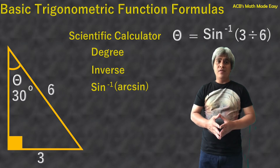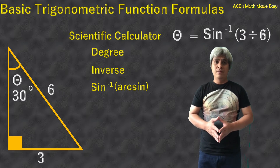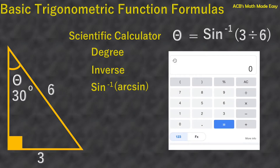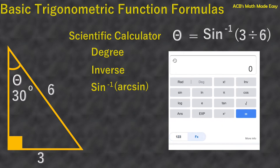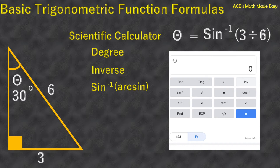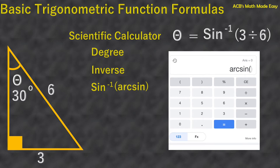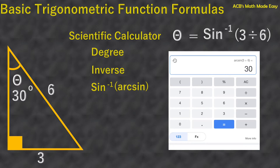I am going to use the scientific calculator from Google. Press the FX button to show the other functions. You can see the degree button — press it. Next step is to press the inverse button, the INV one. You can now press arc sine, and then press the numbers: press 3 divided by 6. Press the close parenthesis and press equals. You will see that the answer is 30 degrees.